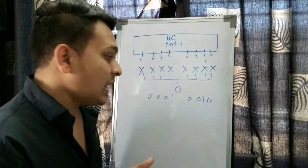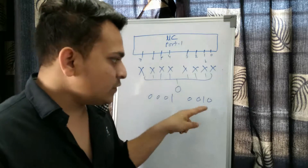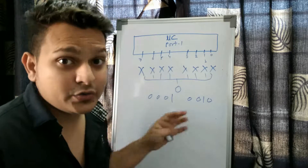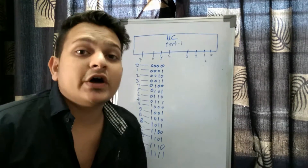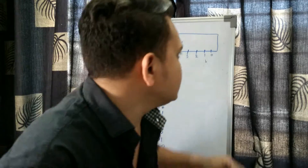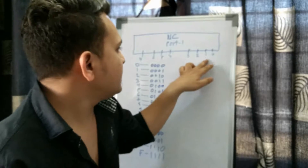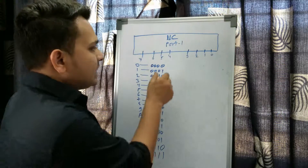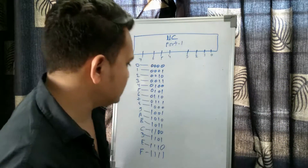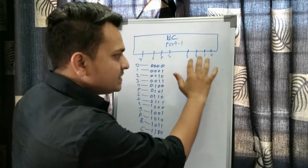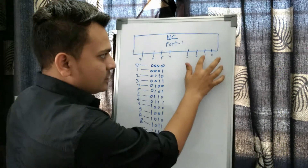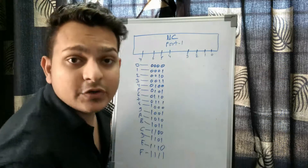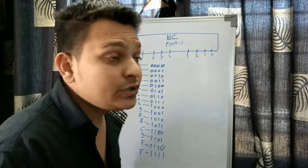Instead of writing binary directly, you can use hex values. Split the 8 pins into two groups of 4 bits each. For example, if you want only one LED on in the lower nibble and none in the upper nibble, you set the lower 4 bits as 0001 and upper 4 bits as 0000. If you want three LEDs on and one off, you apply 0111 for that nibble.